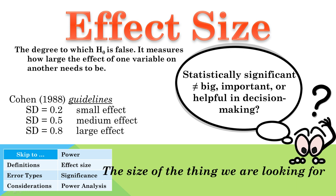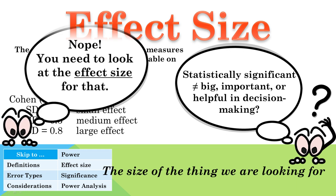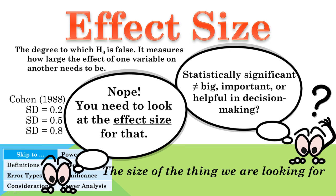Effect sizes are a standardized measure of how large the influence of one variable is on another variable — another way to look at it is the degree to which the null hypothesis is false. Before a study begins, an effect size, either known or estimated, is used as part of the power analysis to determine how large a sample is needed to achieve a power of greater than or equal to 0.8. Effect size is measured in standard deviations. When interpreting or critiquing research, the guidelines developed by Cohen are often used — however, keep in mind that these are simply guidelines. Effect sizes need to be interpreted within the context of the research.